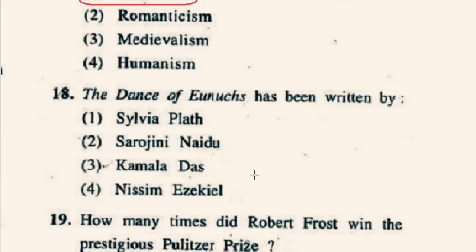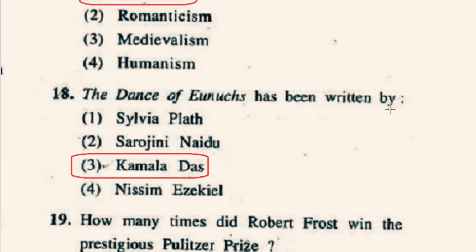Question number 18: 'The Dance of the Eunuchs' has been written by whom? 'The Dance of the Eunuchs' is a poem composed by Kamala Das. This poem has an autobiographical element written in confessional style that symbolically portrays the poetess's personal melancholy in her life. This poem is part of the collection Summer in Calcutta published by Kamala Das in 1965. The correct option is 3rd option, Kamala Das.